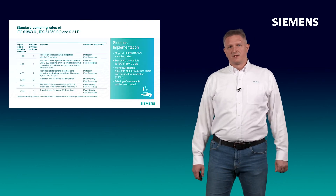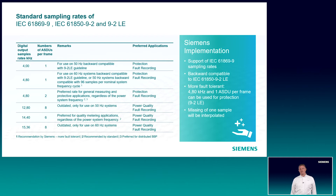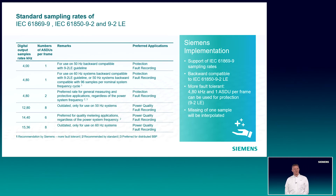What sampling rates are supported by SIPROTEC 5 process bus? You can have the IEC 61850-9-2 LE streams, which are backwards compatible, as well as the IEC 61869-9 streams with flexible assignment. For more fault tolerance, a missing sample will be interpolated and does not cause any interruption of protection.